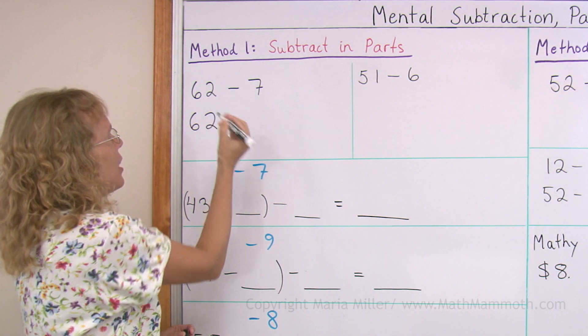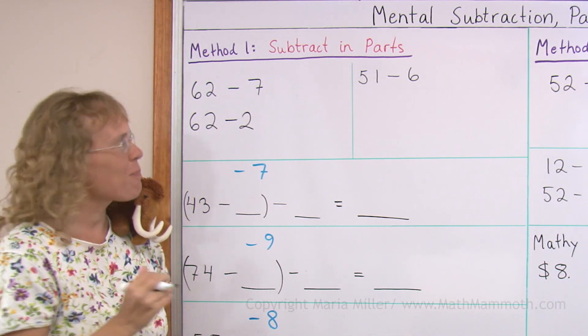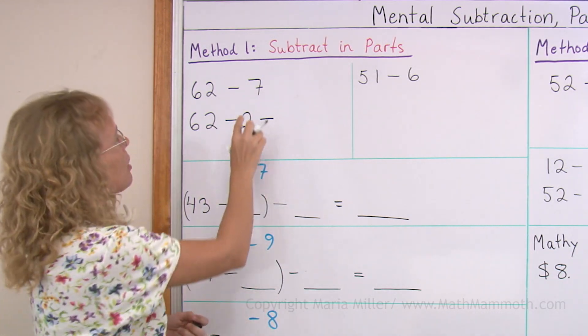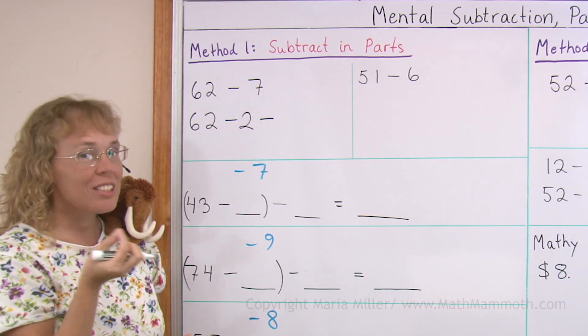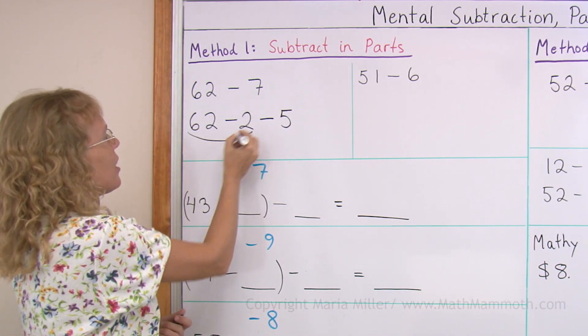So, 62 and we take away 2 first because the result of that is 60. And then after that we have to subtract some more, right? Because we need to subtract a total of 7. So 2 and then 5.